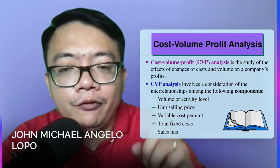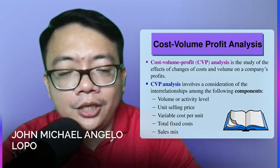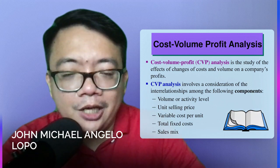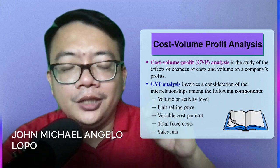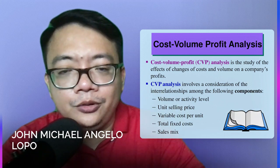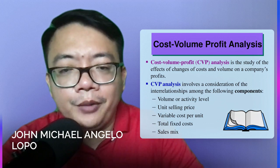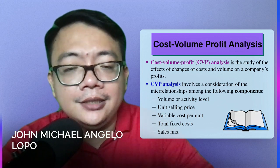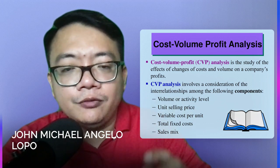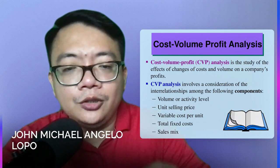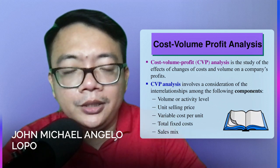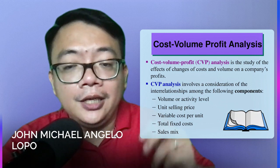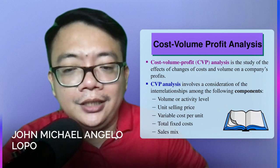Meaning to say, you have your cost — the variable and fixed. The volume refers to your unit sold or unit produced. What is your profit? The profit here is basically your sales minus variable cost, which equals your contribution margin, and the CM minus your fixed cost gives you your net income.